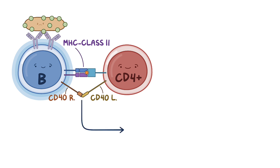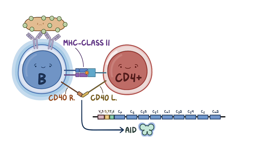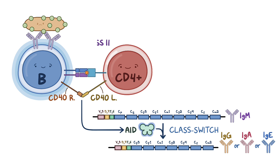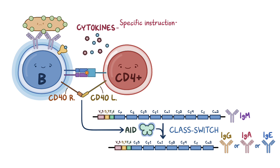This triggers a series of events that eventually result in the activation of the enzyme called activation-induced cytidine deaminase, or AID. This enzyme is only found in B cells and allows them to make cuts in the DNA, causing the B cell to class switch from IgM to IgG, IgA, or IgE. At the same time, the T cell secretes cytokines that bind cytokine receptors on the B cell, providing specific instructions on what class of antibody it should start producing.